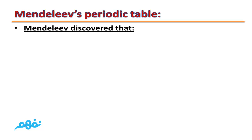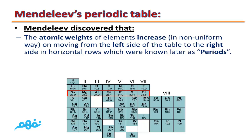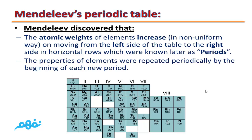After this arrangement, Mendeleev discovered that the atomic weight of elements increases, but in a non-uniform way, on moving from the left side of the table to the right side, in the horizontal rows which were known later as periods. Also, Mendeleev discovered that the properties of elements were repeated periodically by the beginning of each new period.